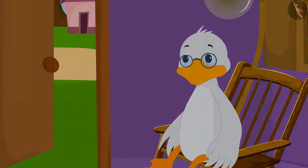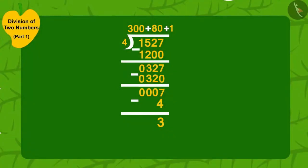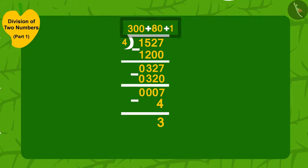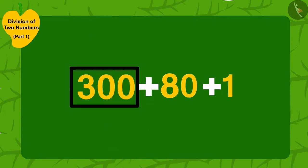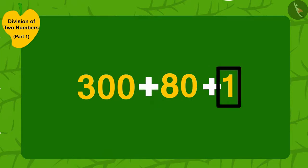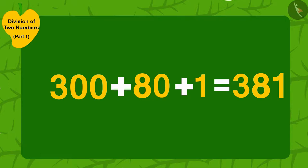Children, can you find out how many villagers did Uncle distribute four mangoes to? To find out, we just have to add the numbers written here. We add three hundred plus eighty plus one. So, we get three hundred and eighty-one.